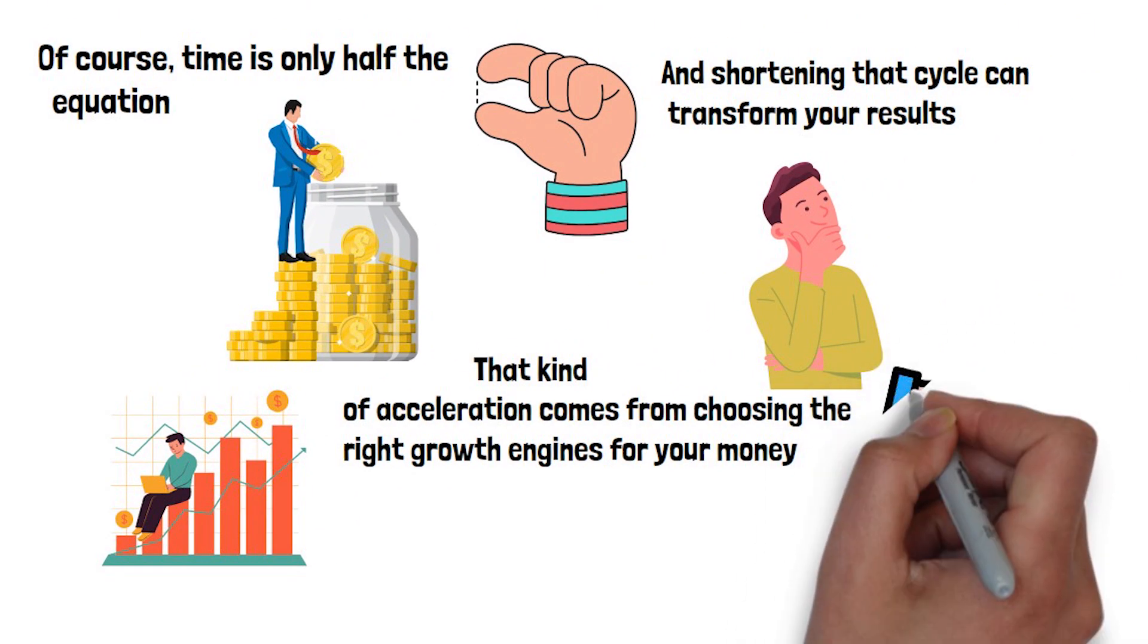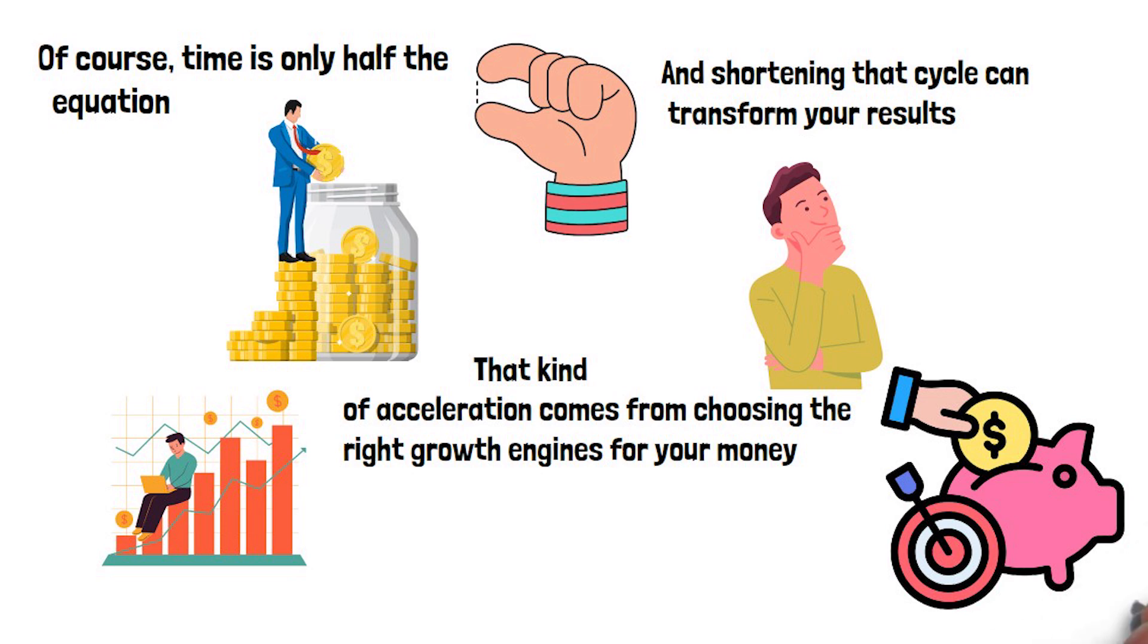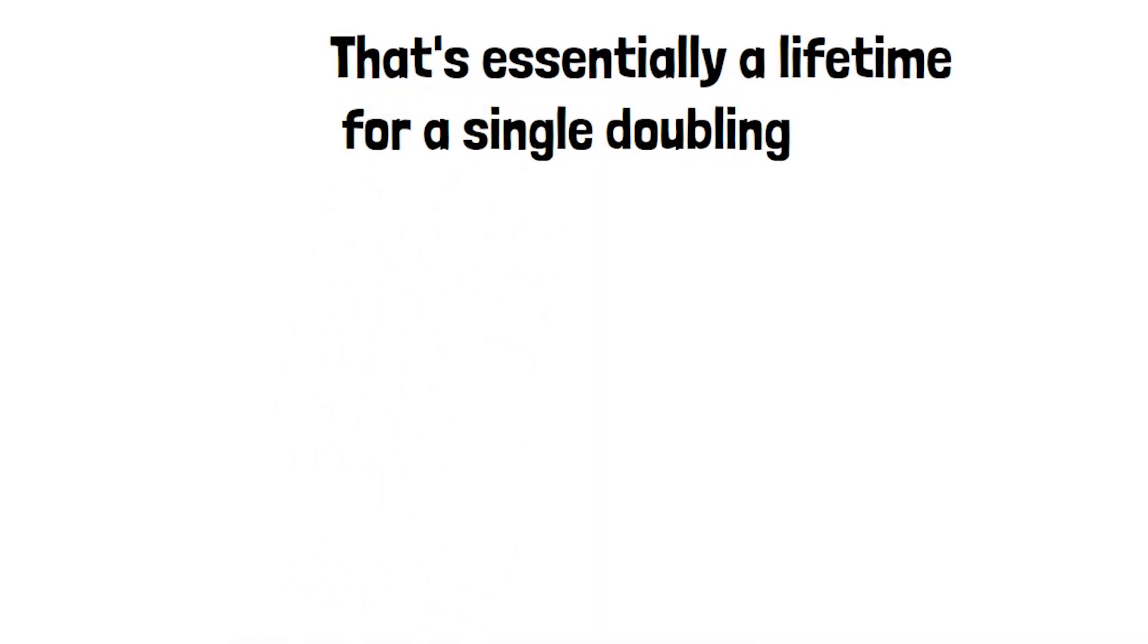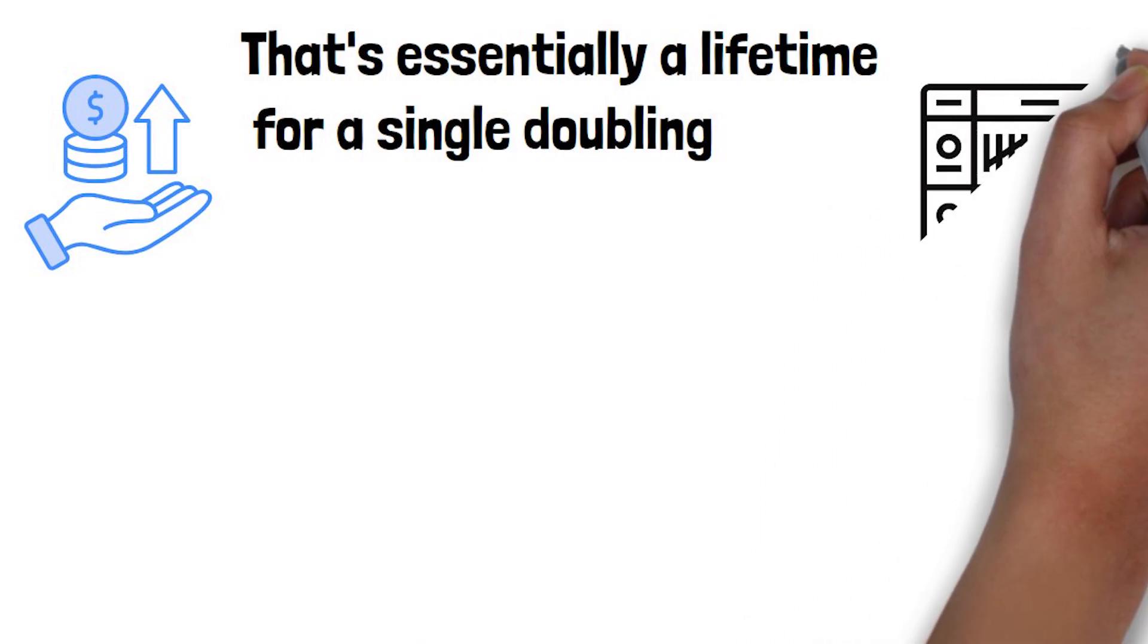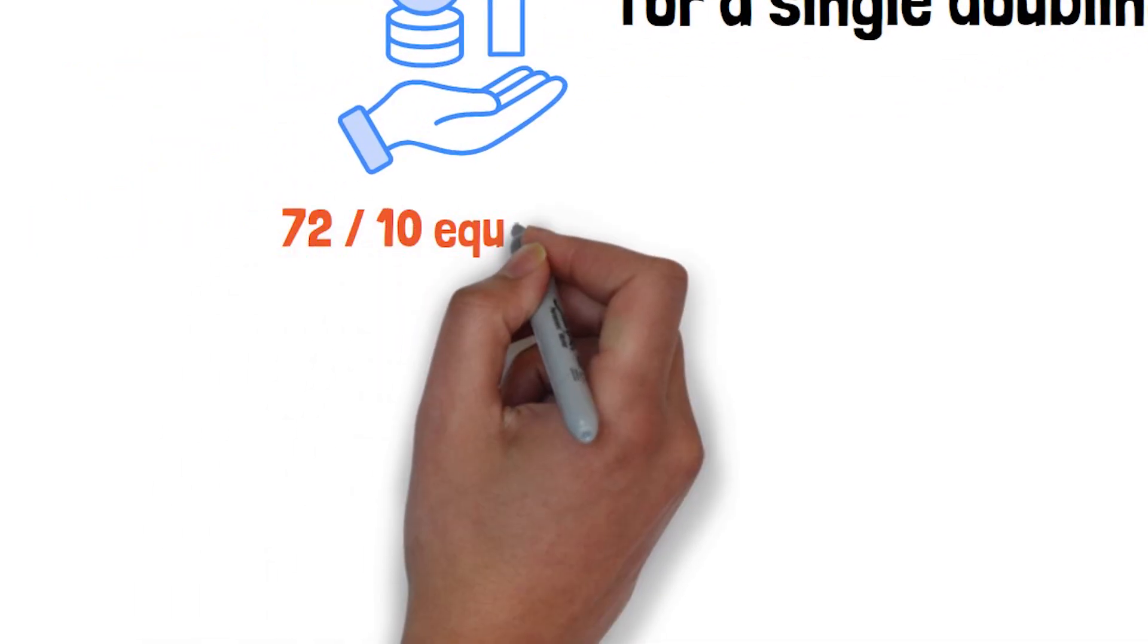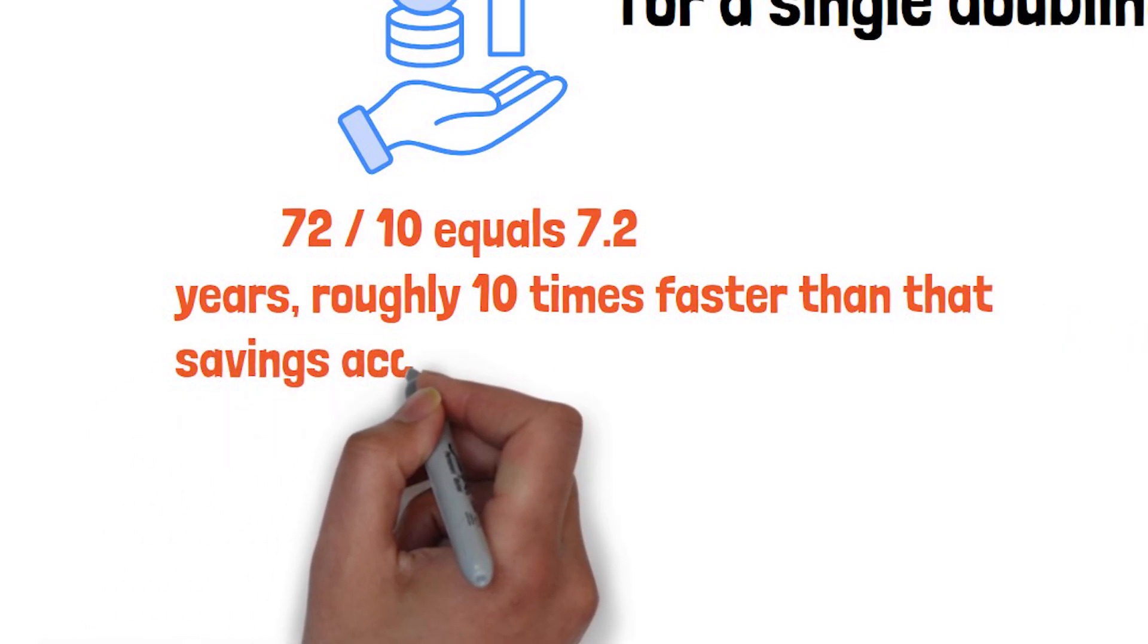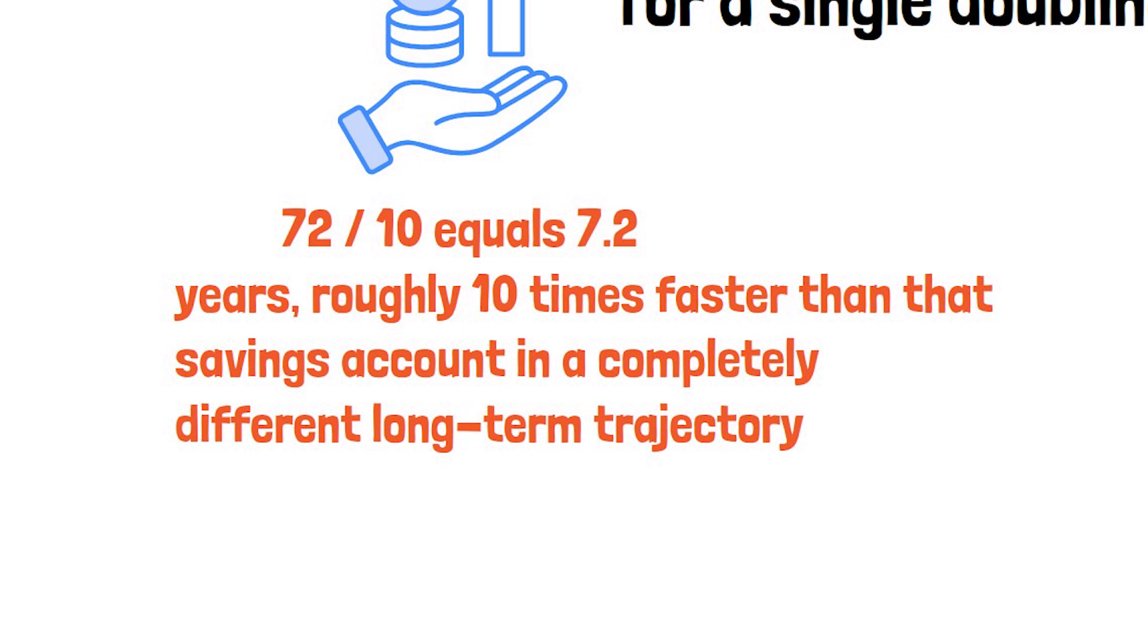And the rule of 72 makes those differences impossible to miss once you compare them side by side. Take a basic savings account earning 1% interest. 72 divided by 1 equals 72 years for your money to double. That's essentially a lifetime for a single doubling. And that's before inflation reduces its value. Contrast that with the S&P 500's historical average annual return of about 10%. Using the same rule, 72 divided by 10 equals 7.2 years, roughly 10 times faster than that savings account and a completely different long-term trajectory.